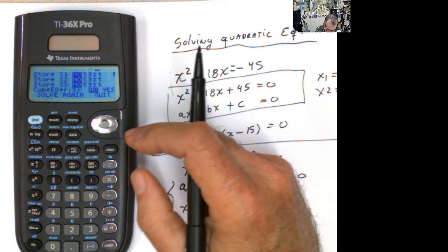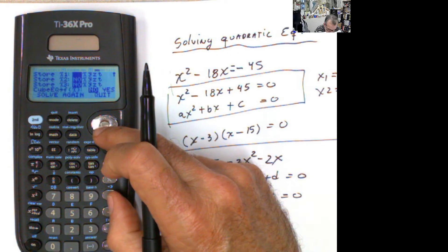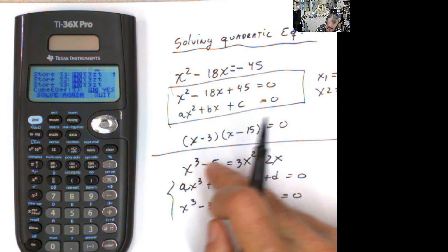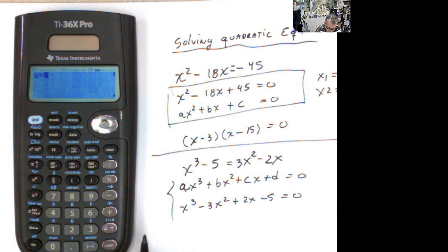If you want to review it again, because you never know if you did something wrong with the coefficient, you just say solve again and check the coefficients that are correct. 1, negative 3, 2, negative 5. Solve. And then you get the values.